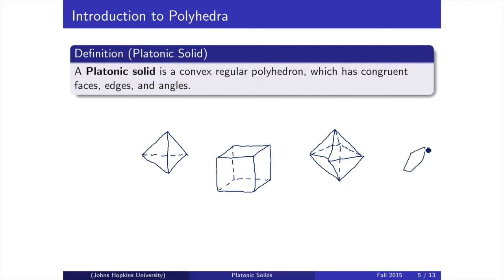There are five known platonic solids, namely the tetrahedron, the cube, the octahedron, the dodecahedron, and the icosahedron. We will show later that these five are the only platonic solids.